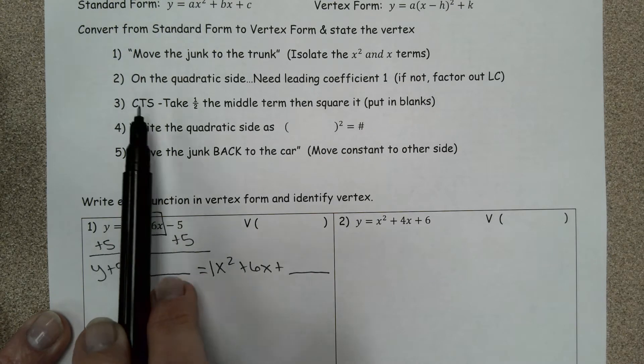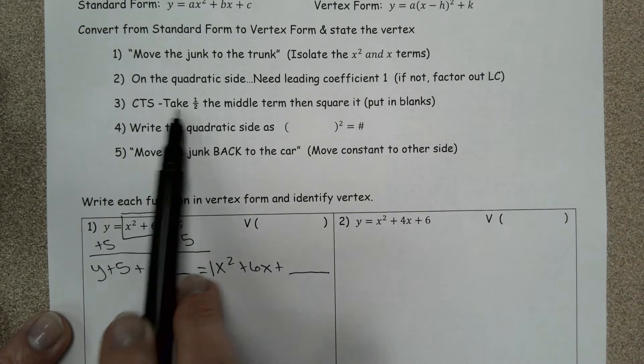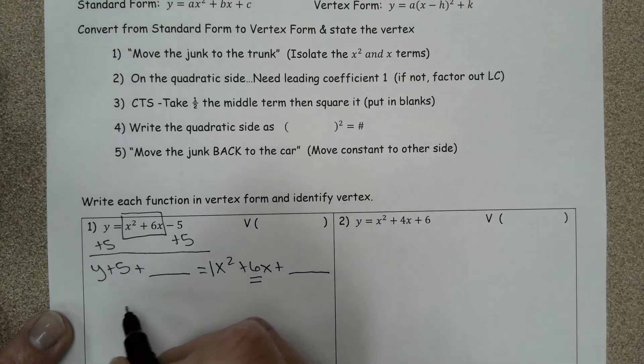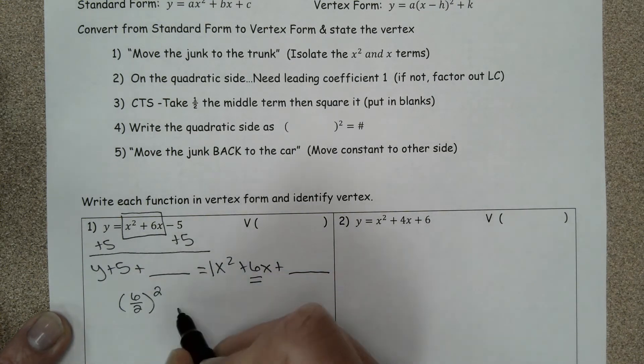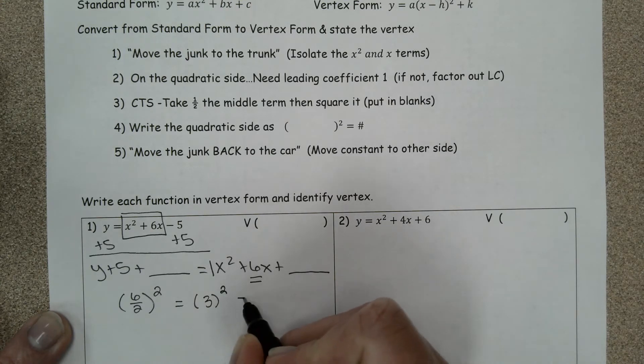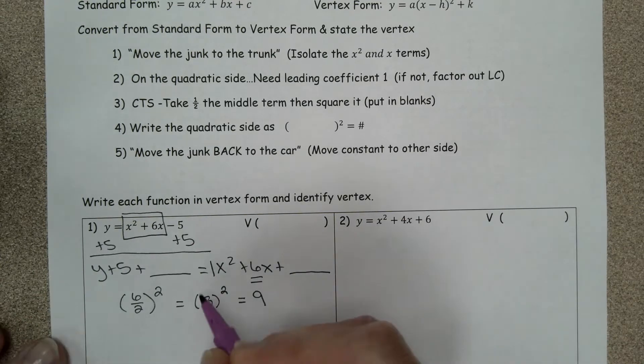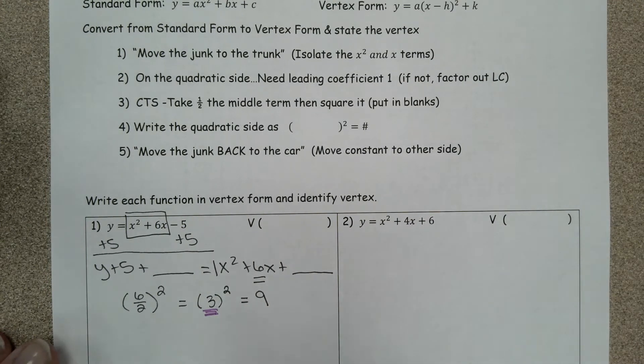Step three, CTS, that stands for completing the square. So that says you take half of the middle term, so we're talking about the six right now, half of the middle term and square it.